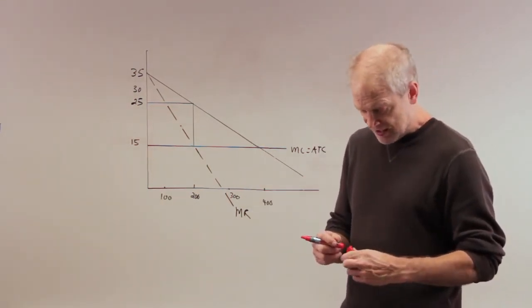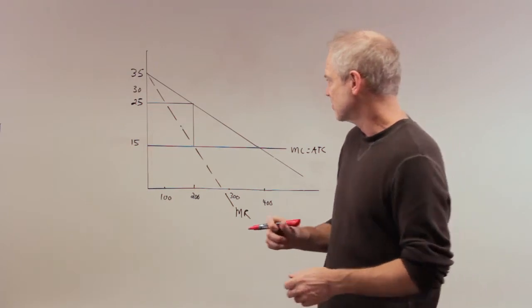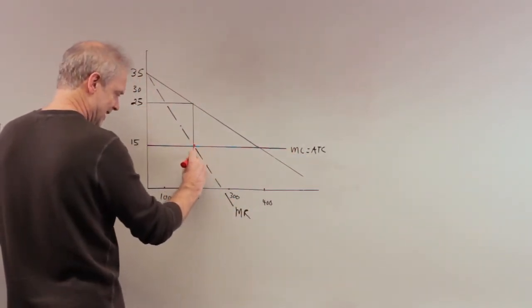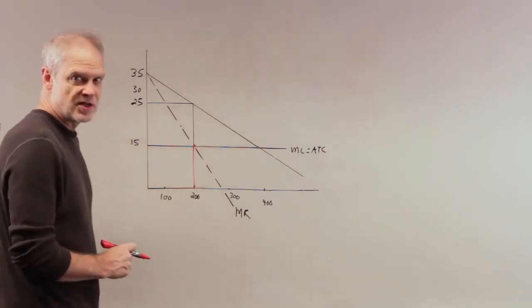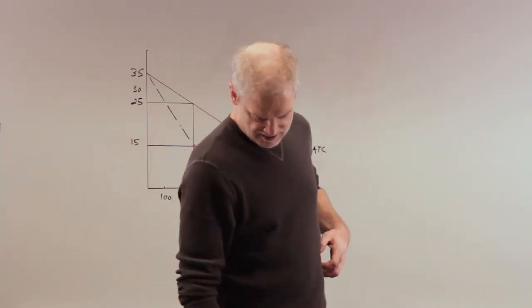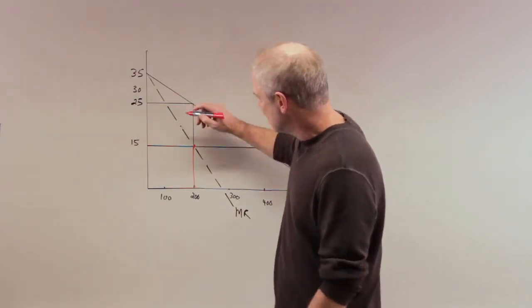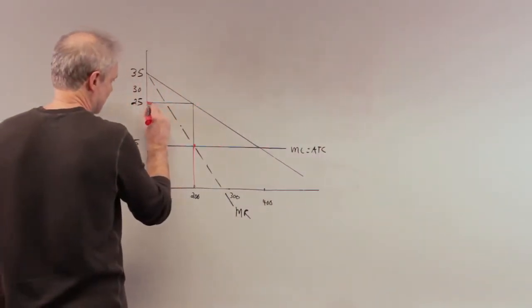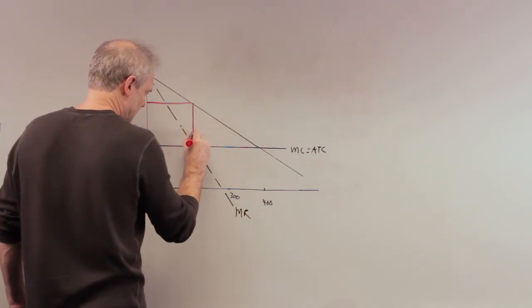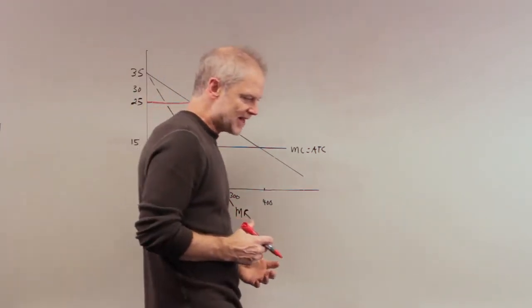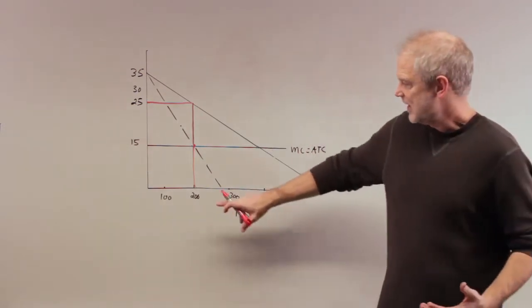We go to our old standby: marginal revenue equals marginal cost. There's marginal cost, there's marginal revenue. That takes us down to 200 units of output being produced. The monopolist is going to go up to the demand curve and charge a price of 25.